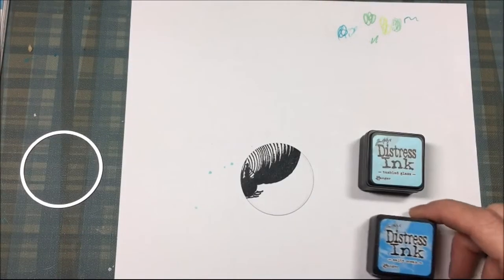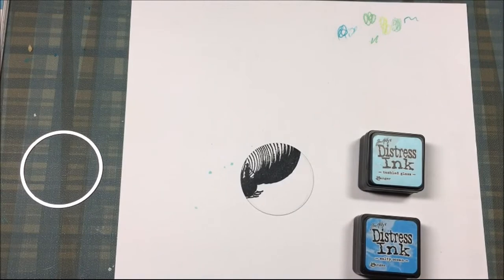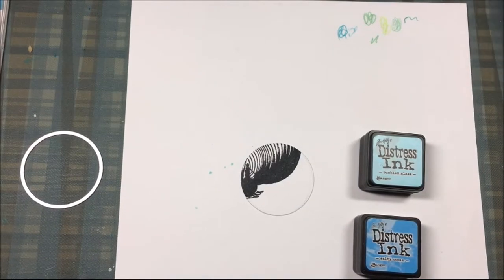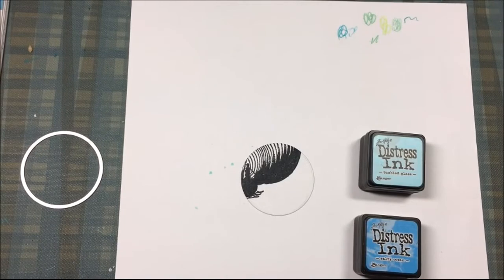I'll be coloring that circle with some Tim Holtz Distress Inks and I'm going to be using Broken China, Salty Ocean, and Tea Dye.